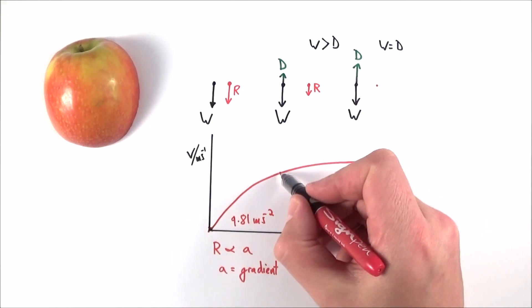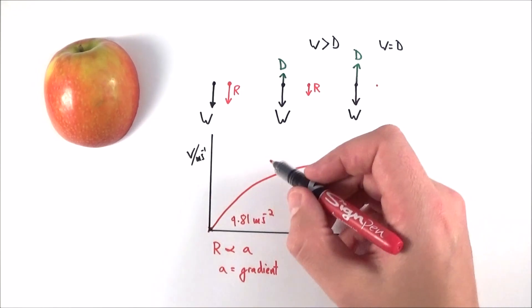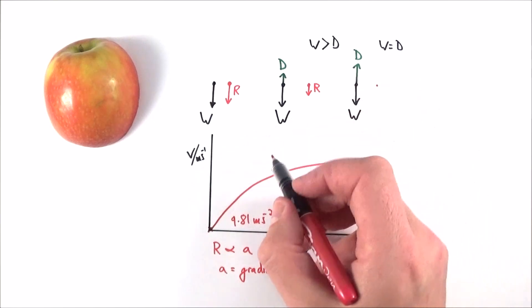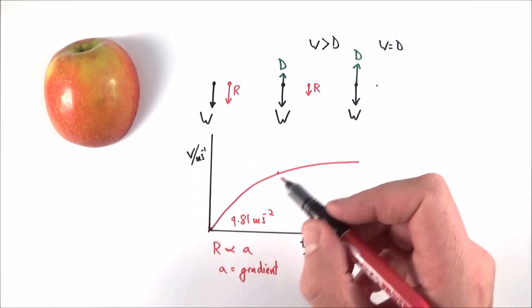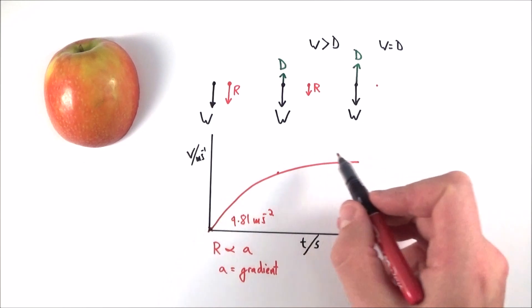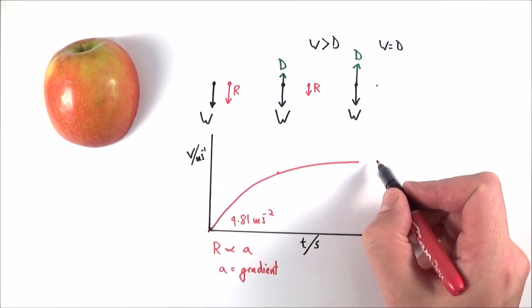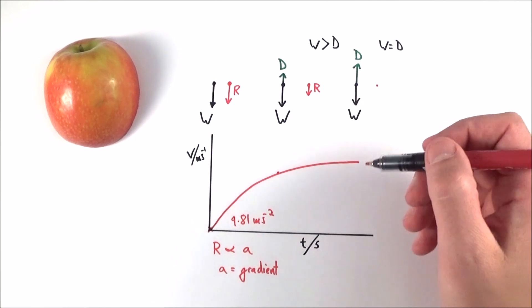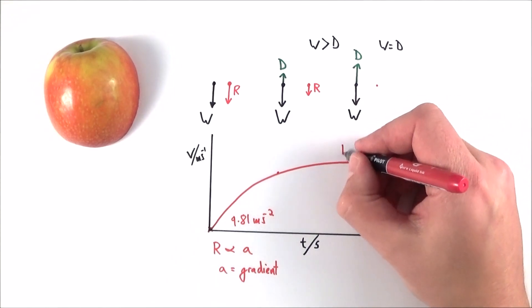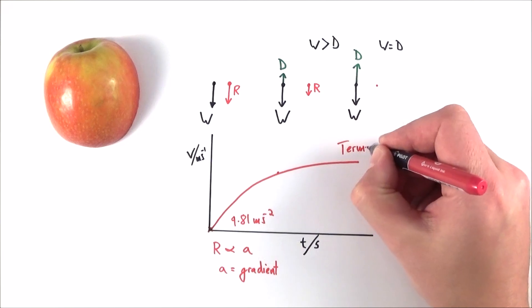As time goes on though, and we maybe look at this point when it's been falling for a while and it's got faster and faster, we have a slightly shallower gradient and therefore the acceleration gets less. As time goes on to this point here where the weight is equal to the drag, the gradient of this graph is zero. That means there's no acceleration, and again it's this point here that we call the terminal velocity.